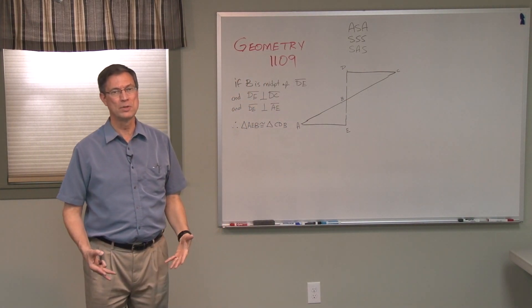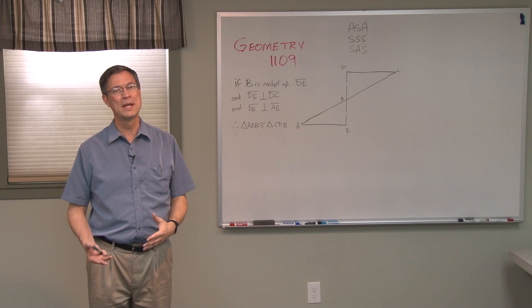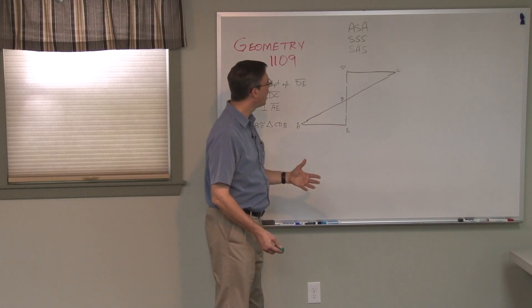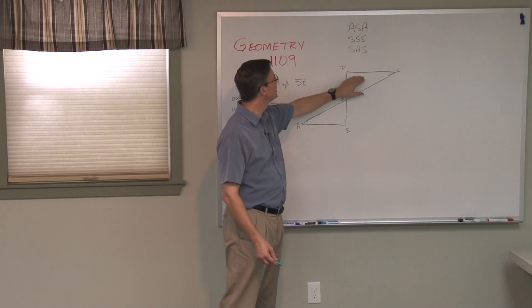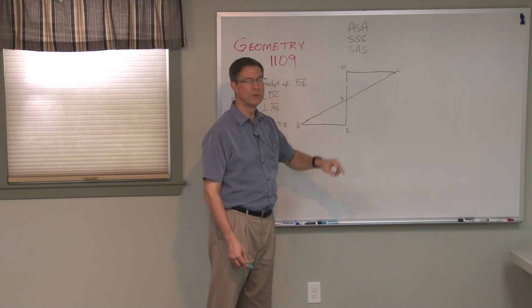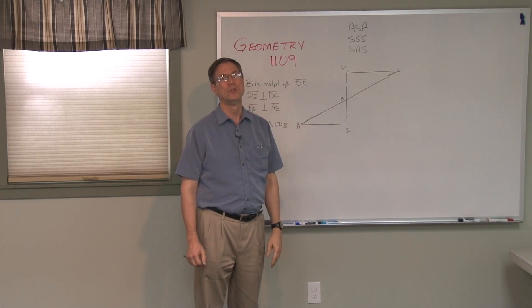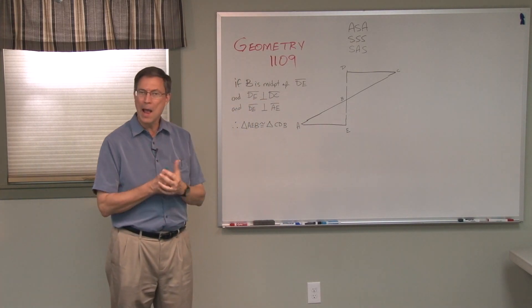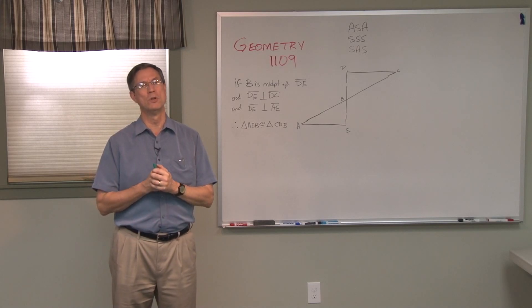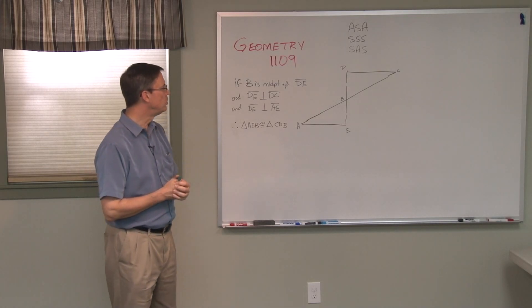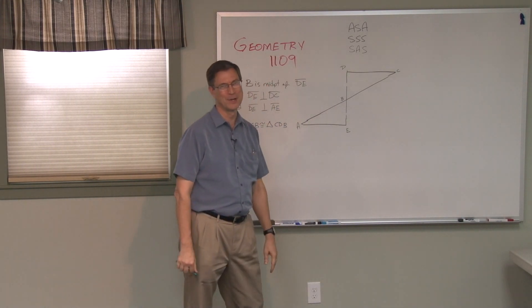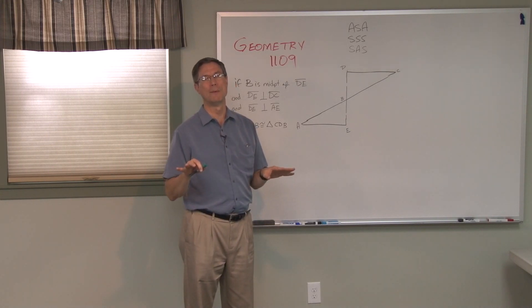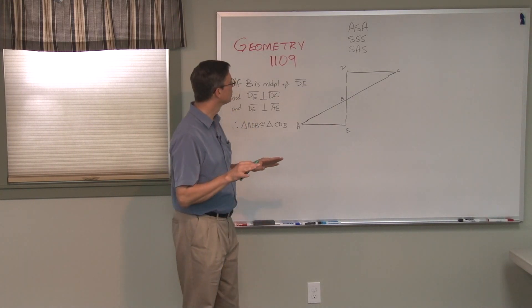Now we have to take the information they give and use that. I have to stress this — you cannot look at the diagram and say, 'this side looks like it's the same as that,' and go marking them equal. You cannot do that. You have to use only the information they give, or information that is absolutely positively known by looking at the diagram. You cannot take out your ruler and say you measured it and it's the same — that is against the rules of geometry.